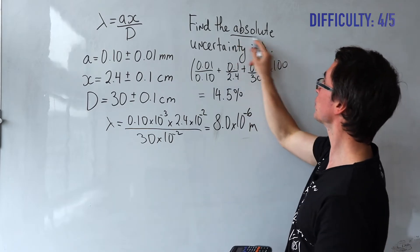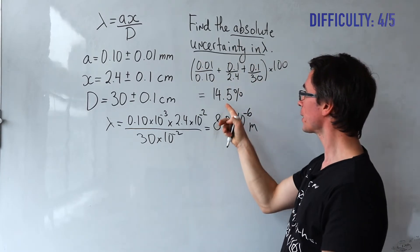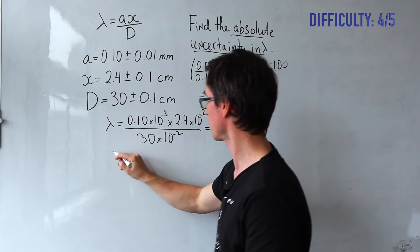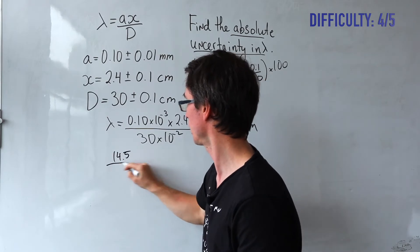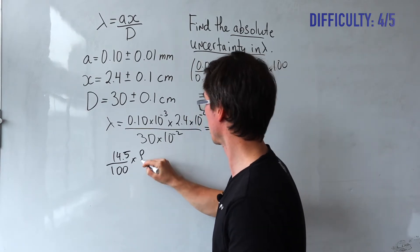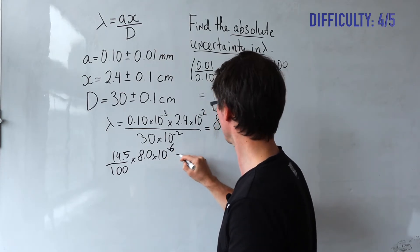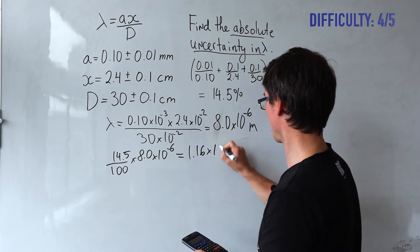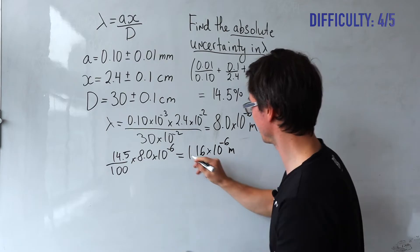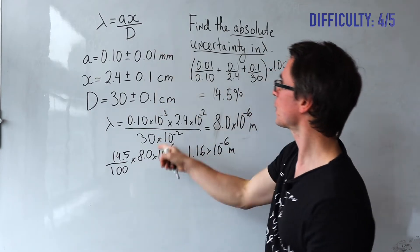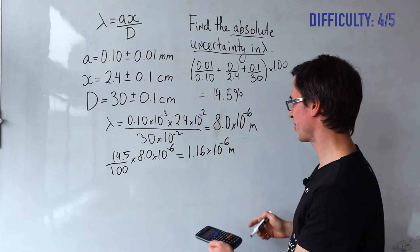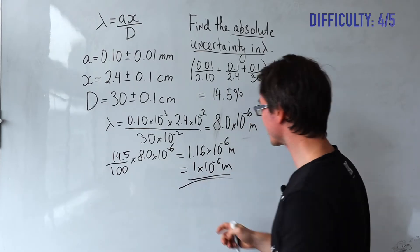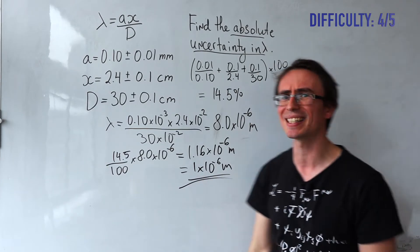To find the absolute uncertainty in lambda, we take 14.5% of 8.0 times 10 to the power of minus 6. So: 14.5 divided by 100, multiplied by 8.0 times 10 to the power of minus 6, gives around 1.16 times 10 to the power of minus 6 meters. Rounding to one significant figure for consistency, the absolute uncertainty in the wavelength is 1 times 10 to the power of minus 6 meters.